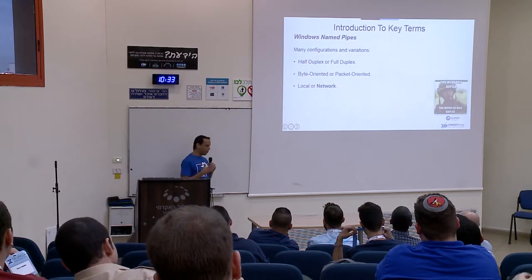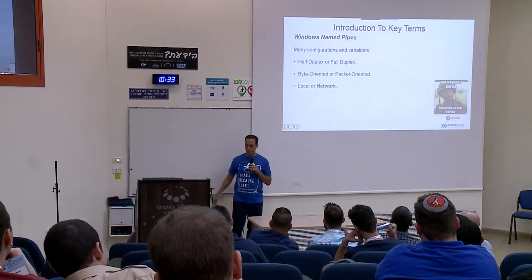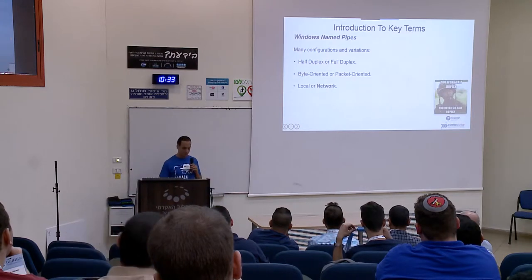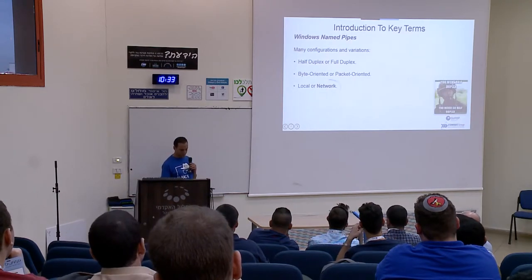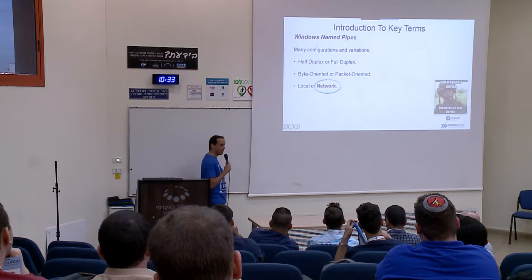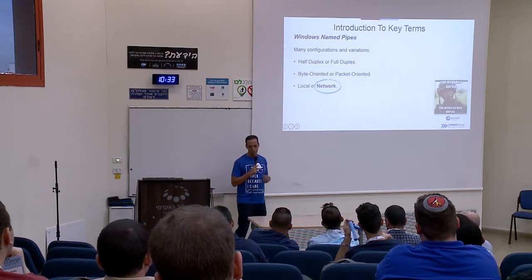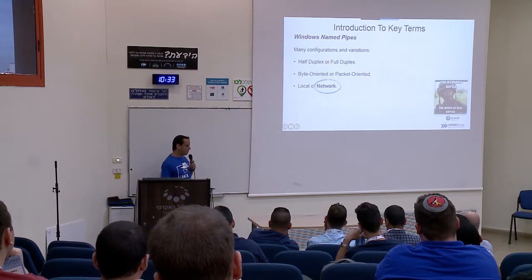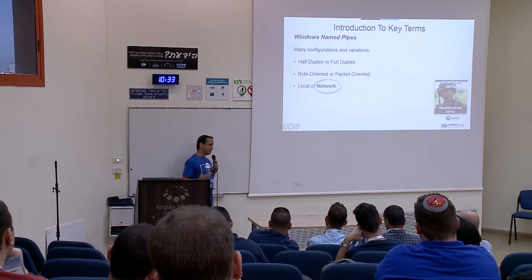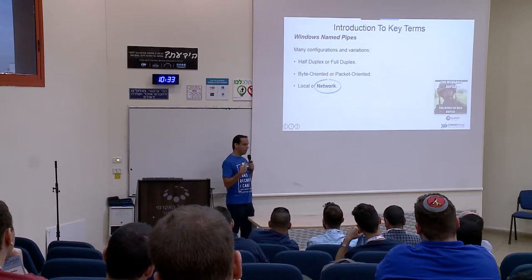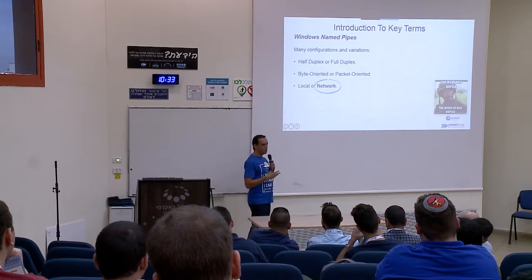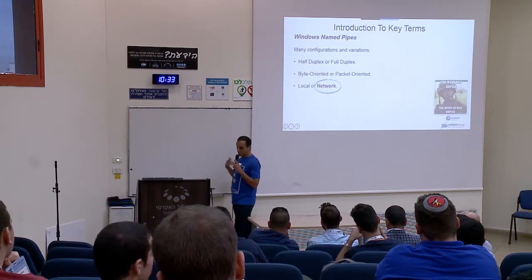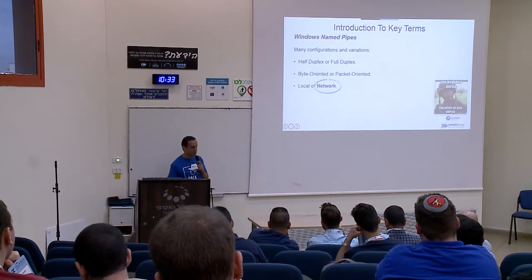There are many configurations of named pipes: half-duplex or full-duplex, byte-oriented, packet-oriented, local, or network. This is something largely unfamiliar to information security consultants. If you do know named pipes, you'd probably think of it as local only — inter-process communication suggests this is a local-only interface, but this is not the case. You can, in fact, connect to a named pipe remotely. This is what this lecture is all about.